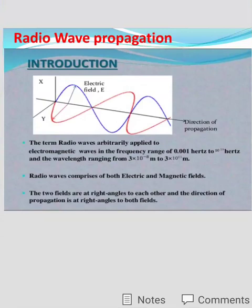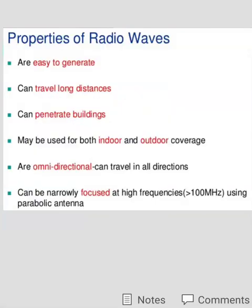Now we will go for some other properties of the radio waves. Radio waves are very easy to generate. They can travel long distance. They can penetrate the buildings, means through buildings also radio waves can travel. They can be used for indoor and outdoor transmission.